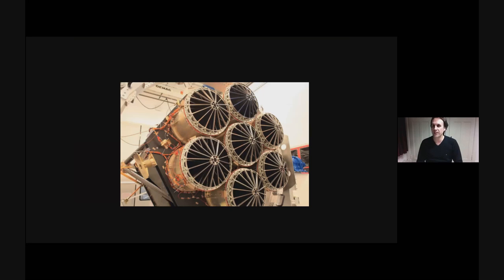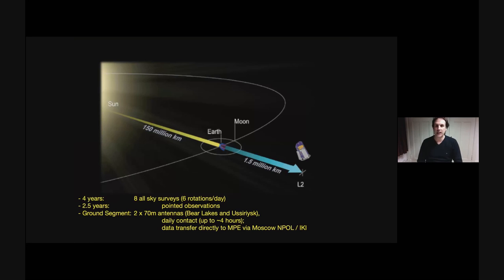If you take off the cover from eROSITA, you look down these seven telescopes. These are Wolter-type x-ray telescopes. They've got 54 concentric shells in them, silicon wafers. You see these baffles here on top of them. It's parked out at L2. It was launched in 2019, and what it's going to do is rotating six times per day and thus scans the entire sky. So every six months it will have covered the entire sky. So it does this for four years, and so we'll complete eight all-sky surveys. And currently we're in the third survey now.